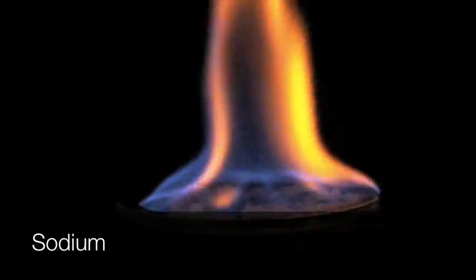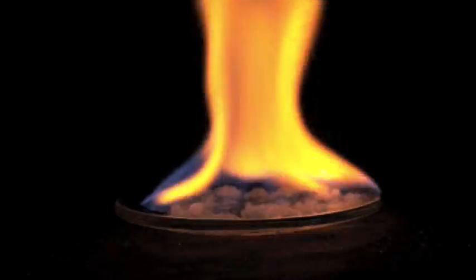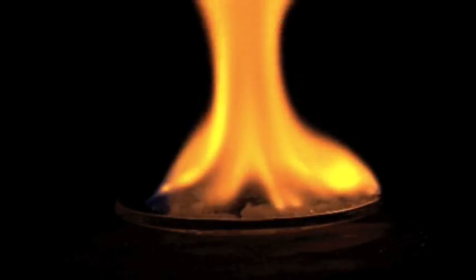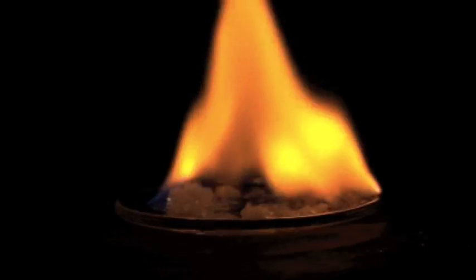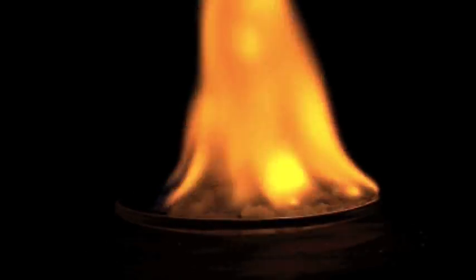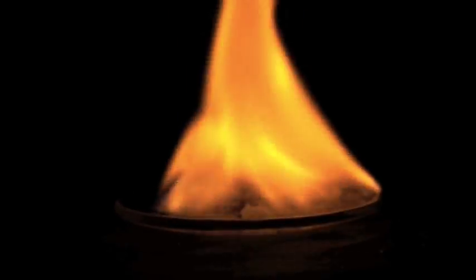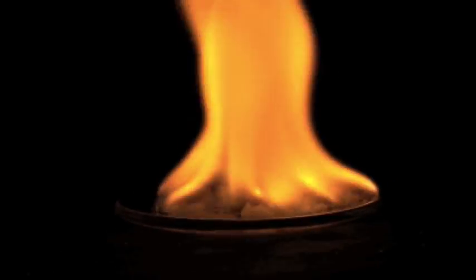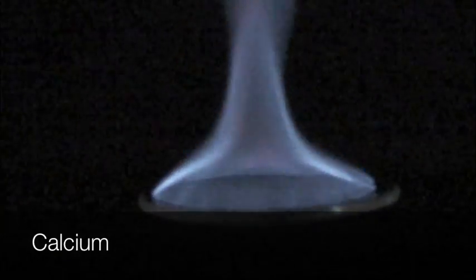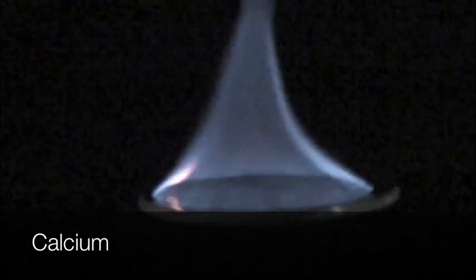Note the strong yellow color of the sodium flame. The emission line spectrum of sodium shows only two yellow lines. The background rainbow in the emission line diagrams are just that — background. It gives you a better idea of where in the visible light spectrum each element's emission lines appear.